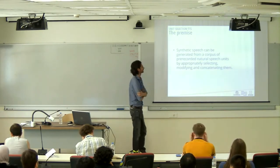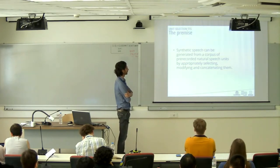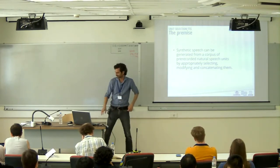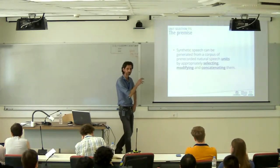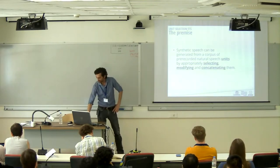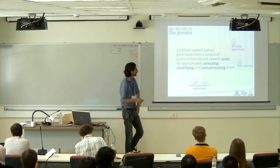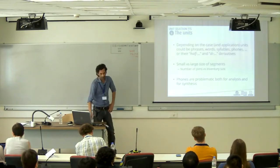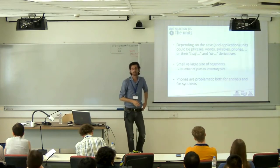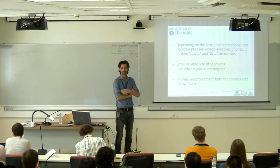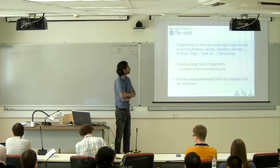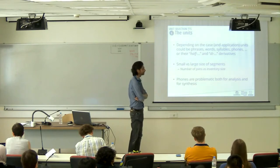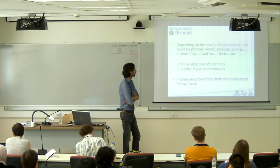The units, depending on the case and application, could be any segments of speech of any size — phrases, words, syllables, phones, or smaller. There are also variants: half-phones, diphones, half-syllables, and so on. The most common choice for a general TTS system is a diphone. When considering the granularity of segmentation, we need to make a trade-off: smaller units means fewer types but more joints, and concatenation is exactly the point which introduces all the artifacts and problems in synthesizing speech.